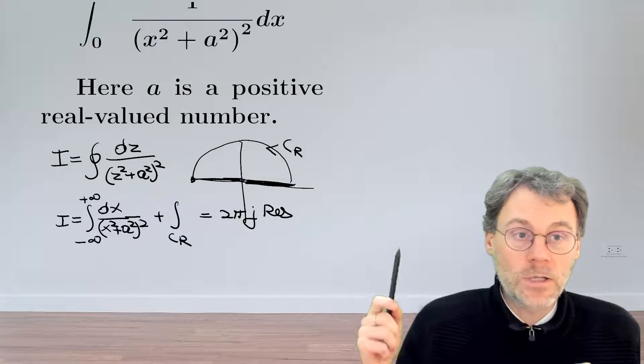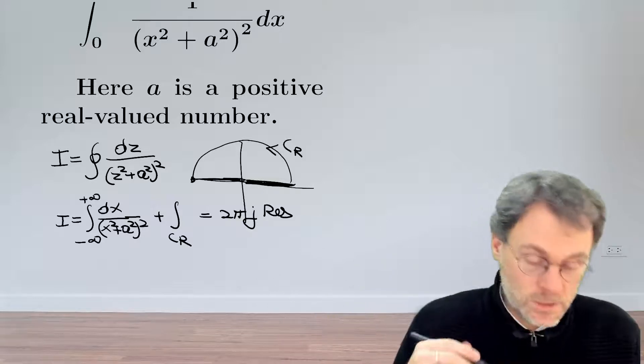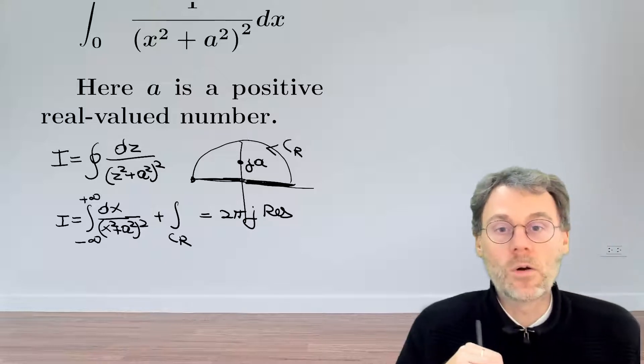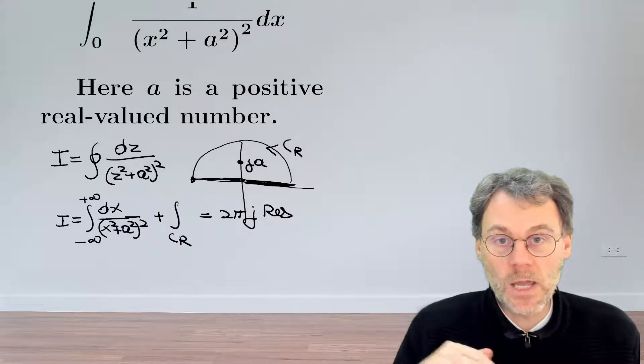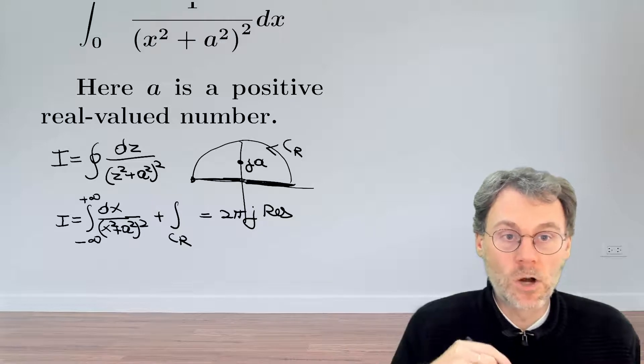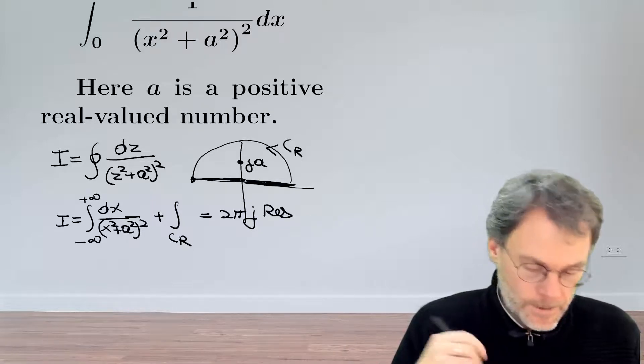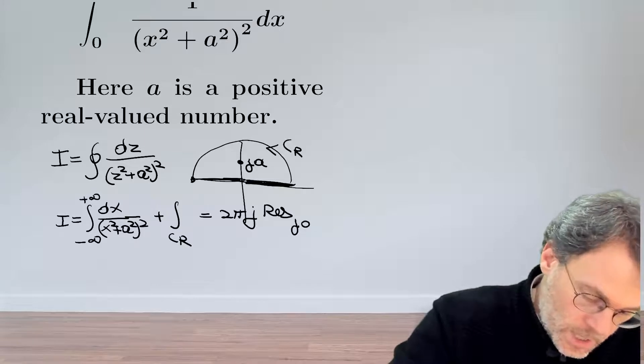This function has two singularities, plus and minus ja. Since a is a positive number, we only need to worry about ja as being the singularity inside our contour. Okay good, so the residue at ja, let's spend some time to calculate that residue now.